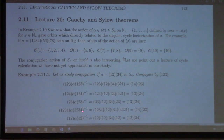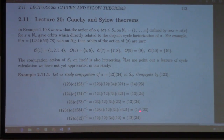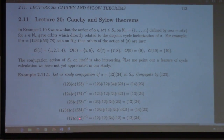Conjugating by (1,2,3,4) gives me (1,4)(2,3). Conjugating by (1,2) gives me (1,2)(3,4). So check it out — what's common to all of these? What's the same about all these?